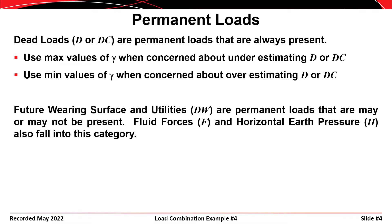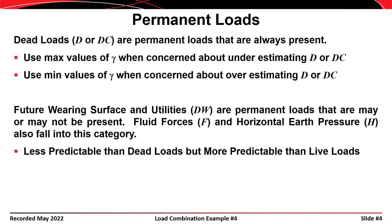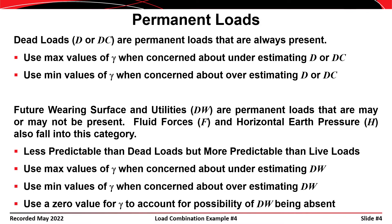Future wearing surface and utilities, called DW in AASHTO, are permanent loads that may or may not be present. Fluid forces and horizontal earth pressures also fall into this category. These are less predictable than dead loads but more predictable than live loads. You use the maximum values of gamma when concerned about underestimating DW, F, or H; the minimum values when concerned about overestimating them; and a zero load factor to account for the possibility that these forces might not be present at all.